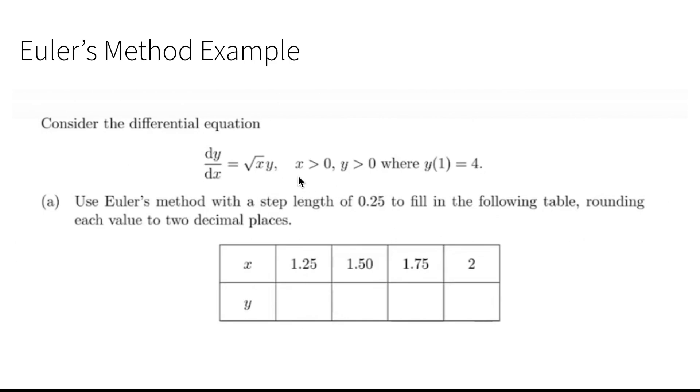We're also given limitations that x has to be greater than 0 and y has to be greater than 0. We must use Euler's method with a step size of 0.25 to fill in the following table, and we're going to round each decimal to two places.